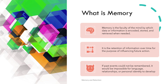Let's begin by discussing what memory is. As per Wikipedia definition, memory is a facility of the mind by which data or information is encoded, stored, and retrieved when needed. It is the retention of information over time for the purpose of influencing future action. If past events could not be remembered, it would be impossible for language, relationships, or personal identity to develop. They are pretty neat definitions that let us build an understanding of what memory is.